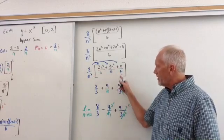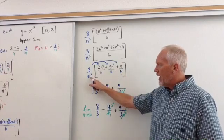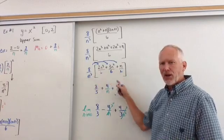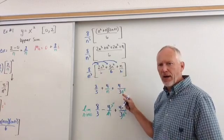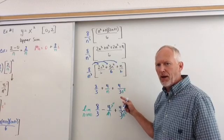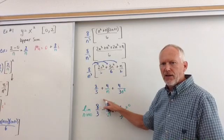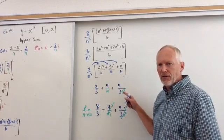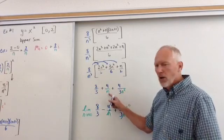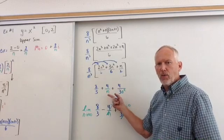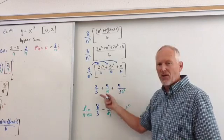8 divided by 6 is 4 thirds. n divided by n cubed is just a lower n squared in the denominator. So that's really what we're after right there. That is the answer. That is the sum. We don't know what n is. So if we did, we could plug that in and figure out what that sum was.